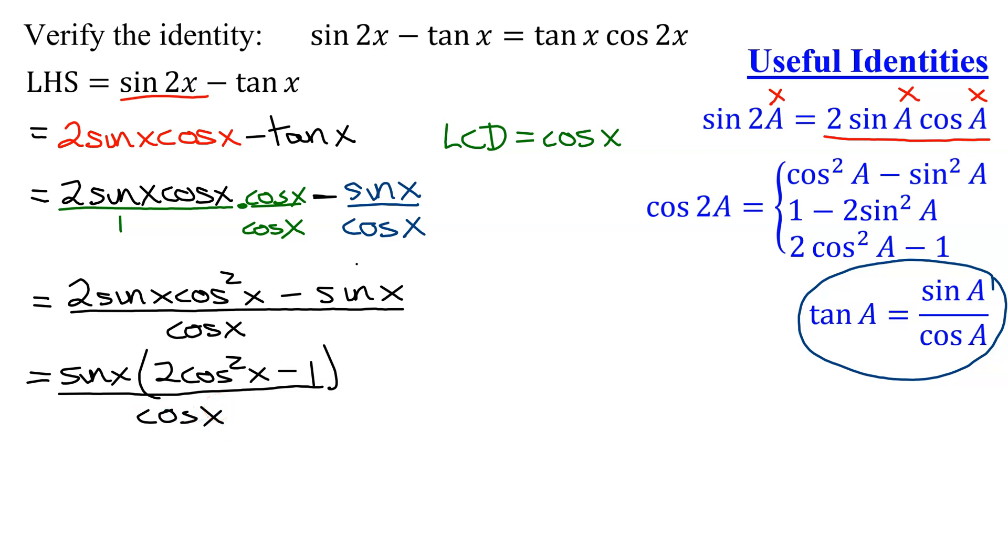Now, is this looking promising? If you look at 2 cosine squared x minus 1, is that a version for the cosine of 2x? Yes. So my expression now becomes, I'm going to write the sine x over cosine x. And I'm going to multiply it by, instead of 2 cosine squared x minus 1, I'm going to write the cosine of 2x, all divided by 1.